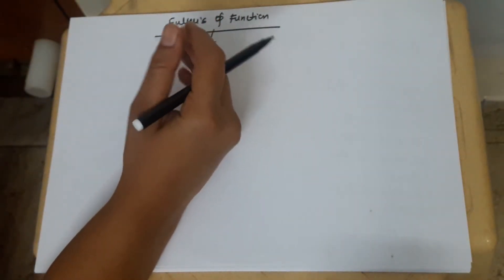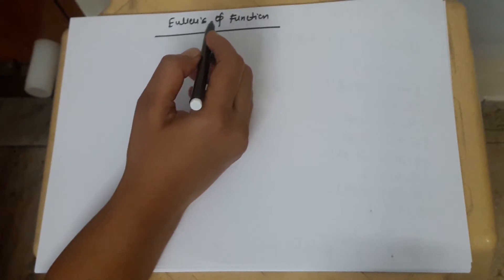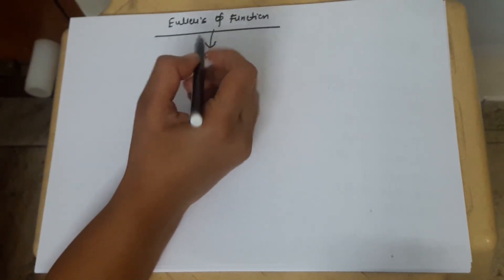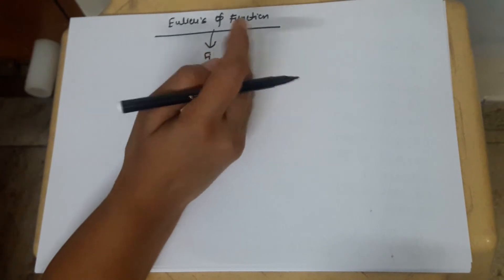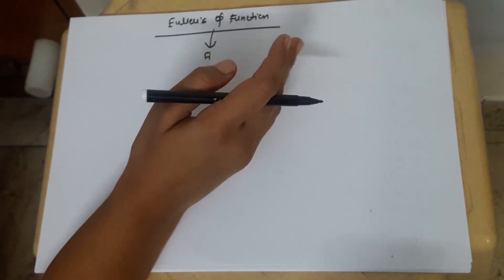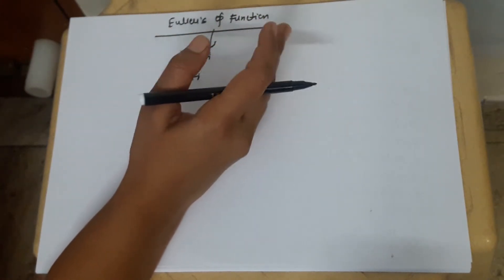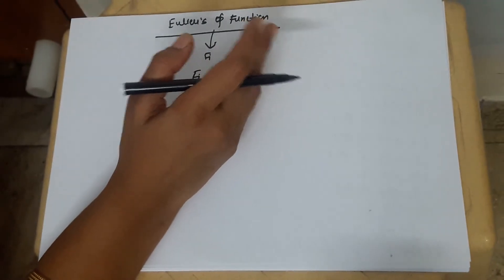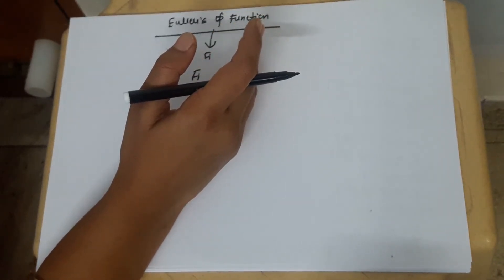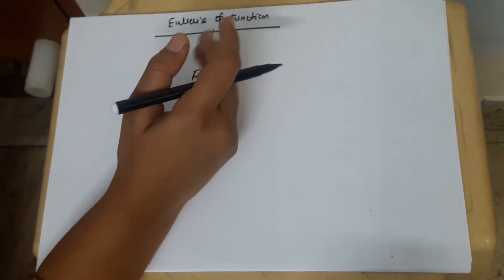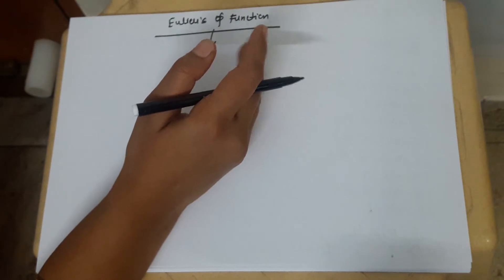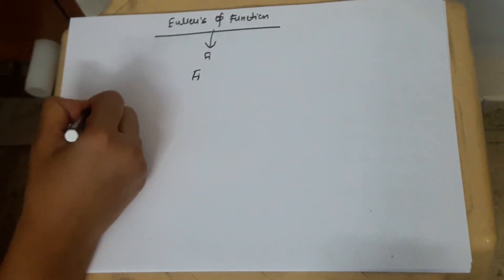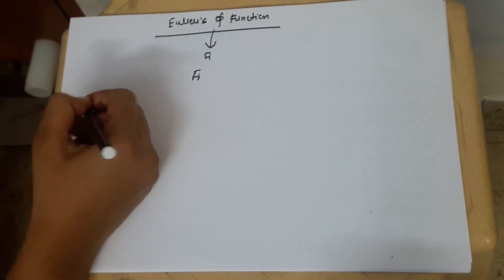Now, what is the meaning of this phi that I have explained you so many times? This is a Greek symbol called phi. Its name is Euler's phi function. First of all I will write the formal definition of this, and then I am going to explain each and everything of that definition. So let's start with the definition.